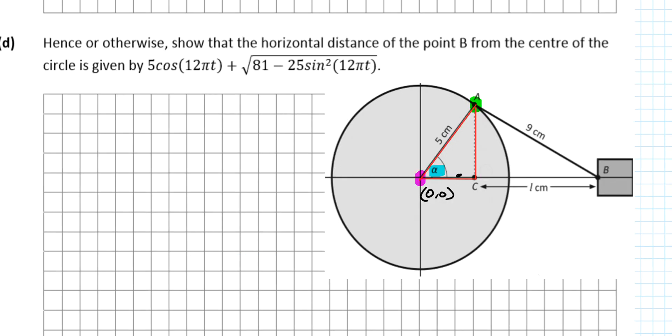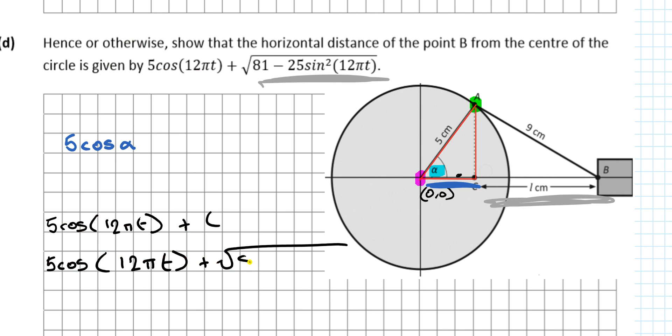Hence or otherwise show that the horizontal distance from point B to the center of the circle is given by 5cos(12πt) plus square root 81 minus 25 sine squared 12πt. Well, I know L can be described as this distance here. And this distance was from the very first question, the 5cosα. But we know the angle at any time is 12πt, so you'd be going 5cos(12πt) plus L. It's a poor question because there's really not much work to it.